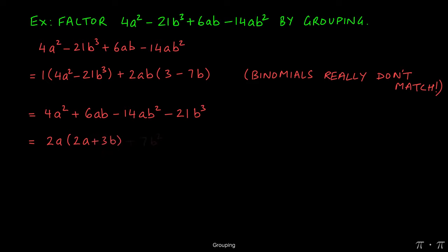From these last two terms, we see that we can factor out a 7b squared. Doing that will give us a negative 2a on the inside, because we can divide negative 14ab squared by 7b squared to get negative 2a. And then similarly, negative 21b cubed divided by 7b cubed is going to give us negative 3b. The binomials still don't match, but we're one step closer to getting there.